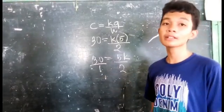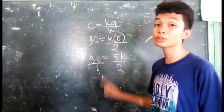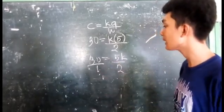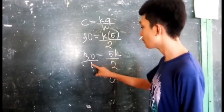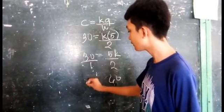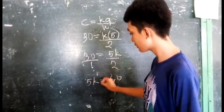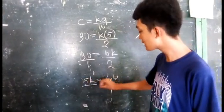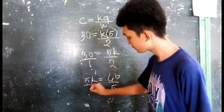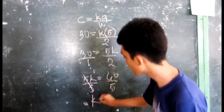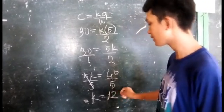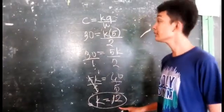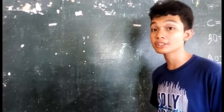Remember that every whole number has a denominator of 1. So cross multiply: 30 times 2 equals 60, and 1 times 5K equals 5K. Isolate K by dividing both sides by 5. So our K equals 12, since 60 divided by 5 equals 12. After finding our K, we can proceed. We have found the value of the constant, which is 12.